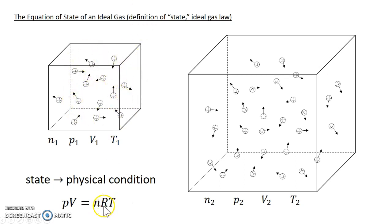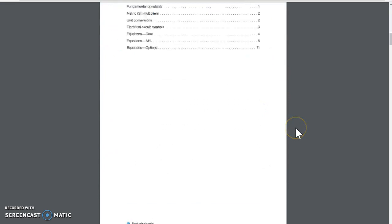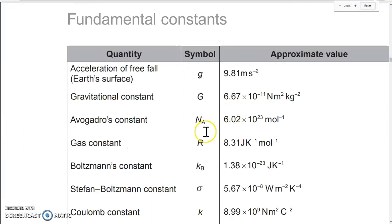This letter R is called the ideal gas constant, and it's provided in our data booklet. If we start on the first page of the data booklet, pretty soon we'll find some fundamental constants. We can zoom in, and right here, the fourth one down, is the gas constant R. The units are joules, Kelvin to the negative one, moles to the negative one.